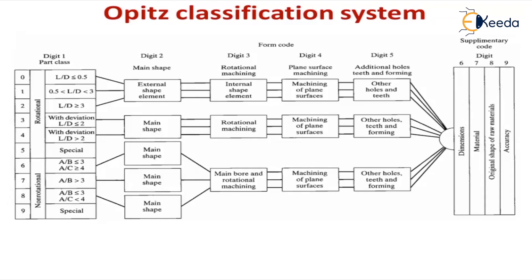Digit 2 describes the main external shape — values 0, 1, 2 describe what the external shape is, such as cubic or hexagonal. Digit 3 is the internal shape element — whether it is a rectangle, square, or involves rotational machining like drilling or boring. Digit 4 is plane surface machining — how machining is done on the plane surface, including additional operations like poles, heat forming, or heat treatment. These 5 digits can be further classified with respect to specific numbers.